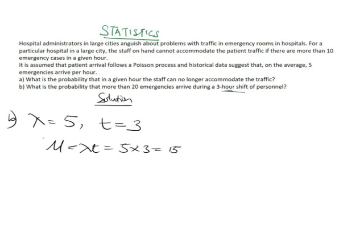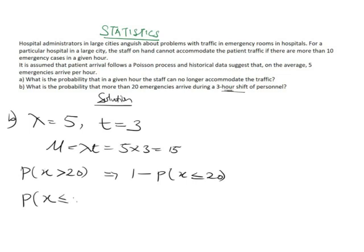Our x here is more than 20, so we need P(X > 20). We don't know the maximum — it could be 50 or 100 — but since X > 20, we apply the complement rule: P(X > 20) = 1 minus P(X ≤ 20).